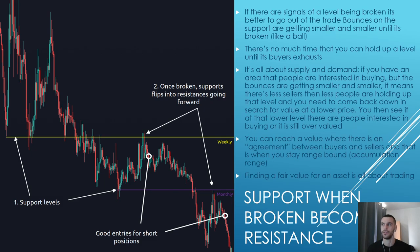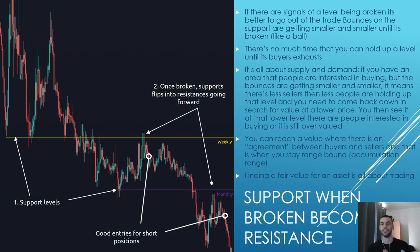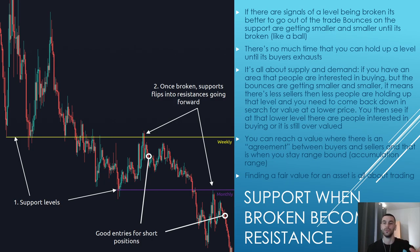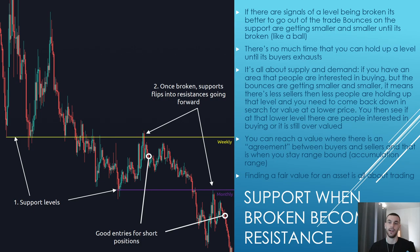Finding a fair value for an asset is what trading is all about. When trading, you're trying to find the fair value at that moment. The market is always giving the perfect price at this moment in time. That's why price is moving — that's why we make money. The worst thing that can happen to an asset is if price stays at one point with no volatility. Price moving is the best thing because it's always trying to find fair value.